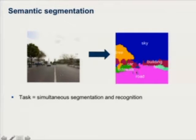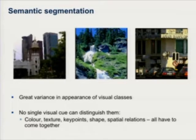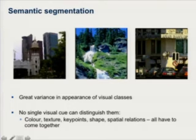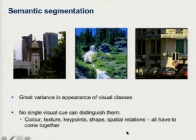You have an image, and you want to label every single pixel with a semantic label out of a closed set given to you — sky, tree, building, car, and so on. This is a task of simultaneous recognition and segmentation of objects. The big difficulty is that there's great appearance variation between different instances of a class. No single visual cue can distinguish between classes. With colour you can tell apart water from grass, but colour alone doesn't separate grass and trees — you'd need texture. For buildings, it's much more about the spatial layout of local corner-like features. You need to combine many different visual features.